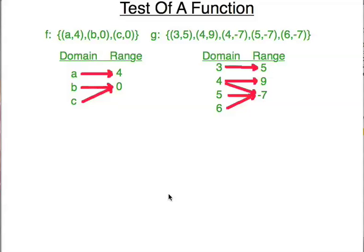In this video, we're going to talk about how to determine if what you have is a function or not. Here we have two functions, function f and function g. Yes, a function can be a set of points — we'll talk about other types of functions later. Function f is these three points, and function g will be these five points.